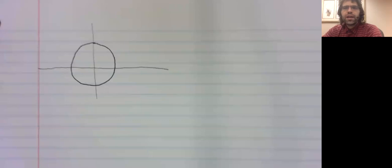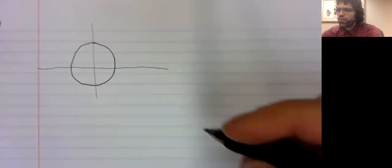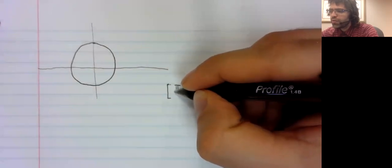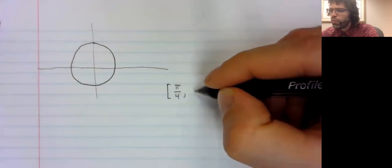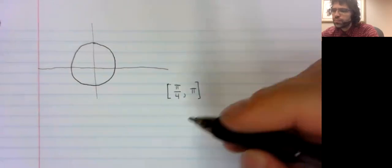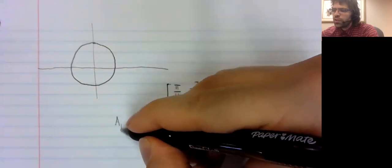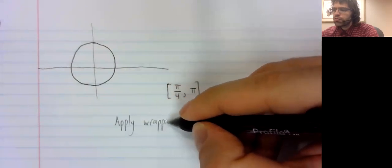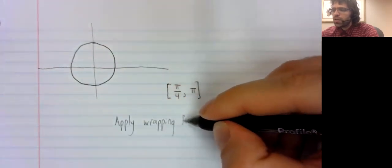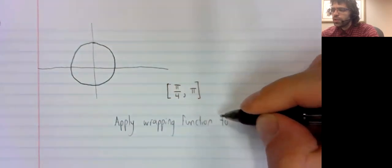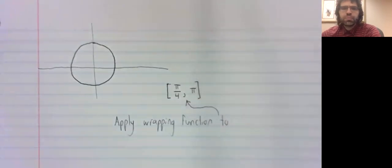So say you have some interval, the interval from pi over four to pi, and you apply the wrapping function to every point in this interval.